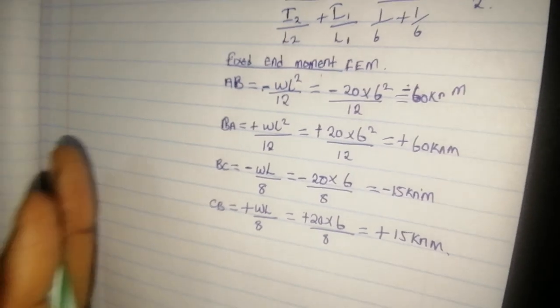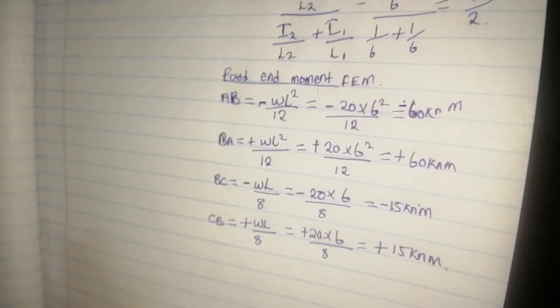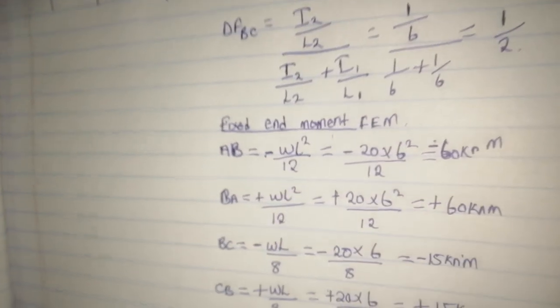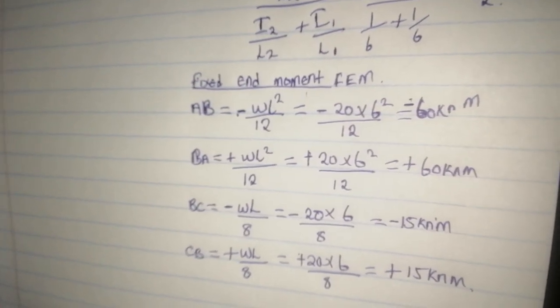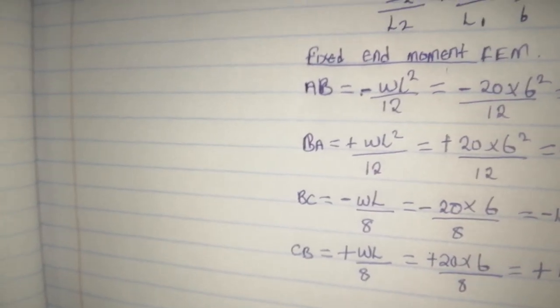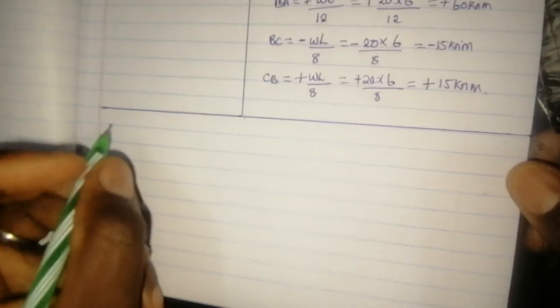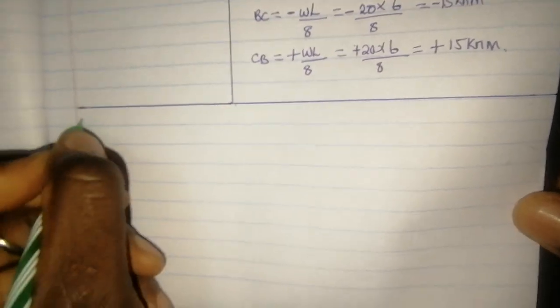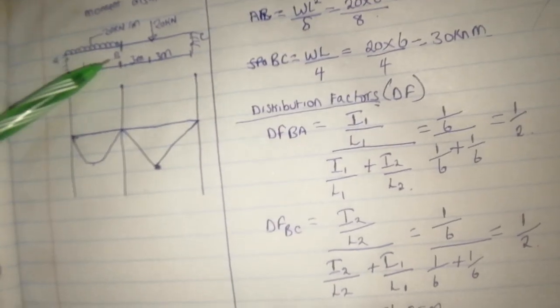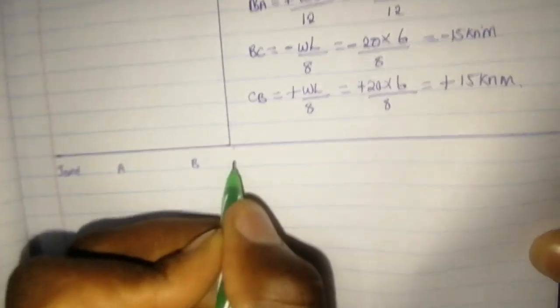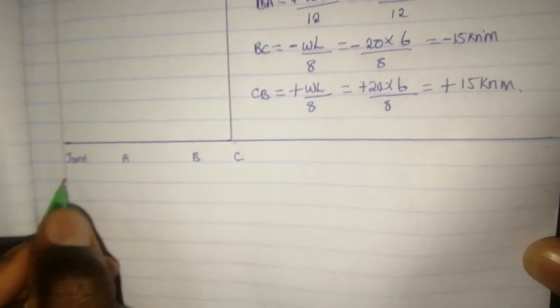We are done with fixed end moments, DF, and span moment. Now we draw the moment distribution table, which we use to balance and find our moments. The table has joints A, B, and C.